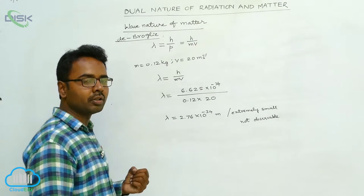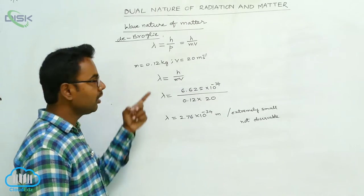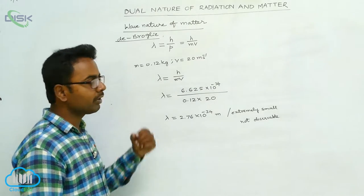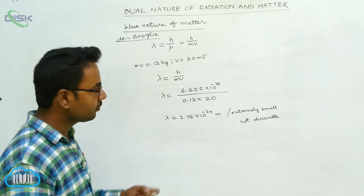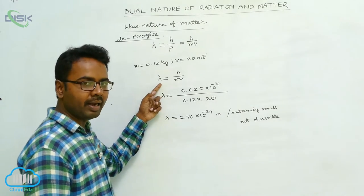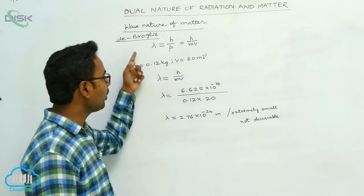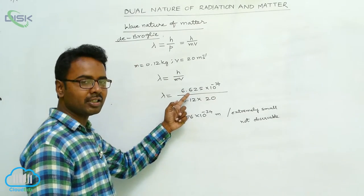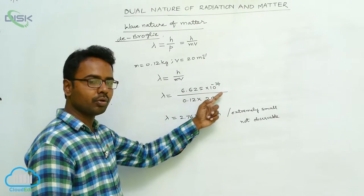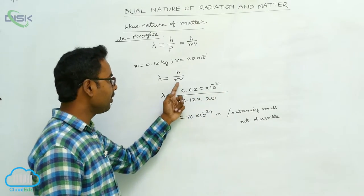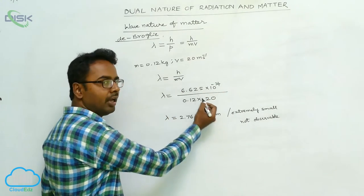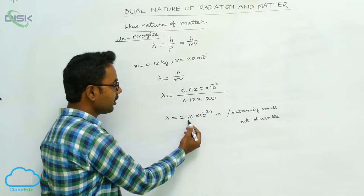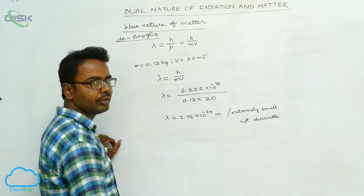We are finding the wavelength for the matter wave associated with this ball of mass 0.12 kg moving with a velocity of 20 meters per second. Wavelength of matter wave lambda is equal to h by mv according to De Broglie. Lambda equals Planck's constant 6.625 × 10⁻³⁴ joule·second divided by mass 0.12 kg and velocity 20 m/s. Calculating this, we get 2.76 × 10⁻³⁴ meter.